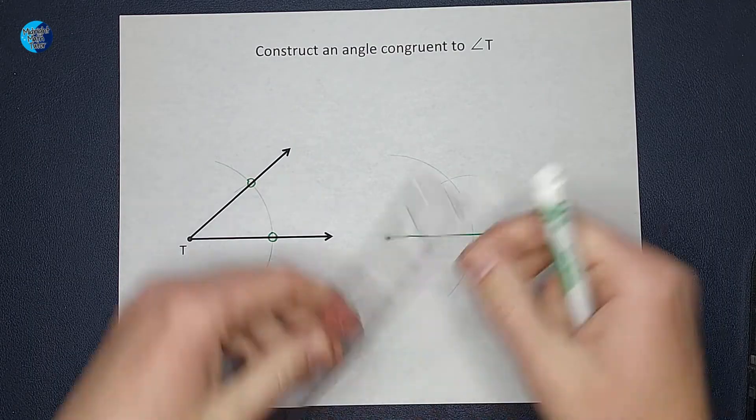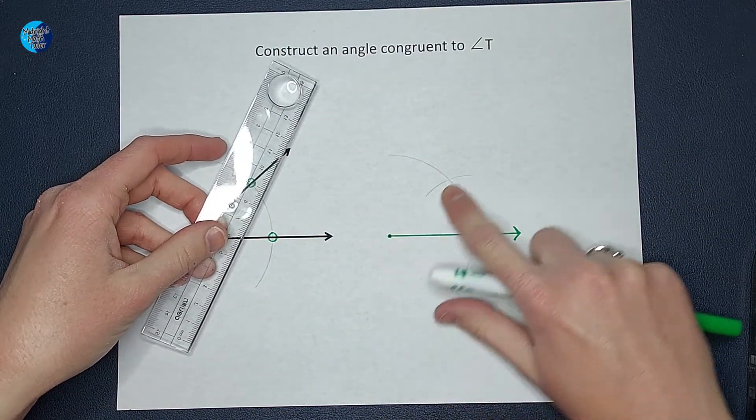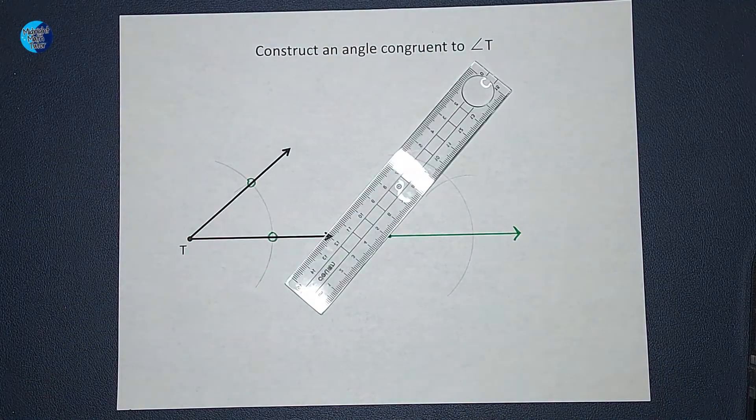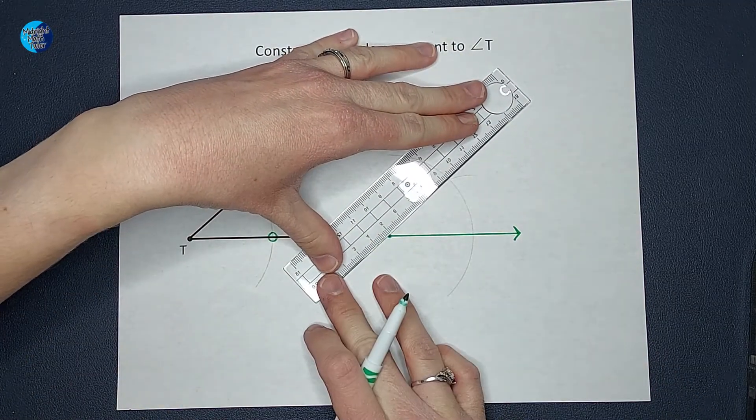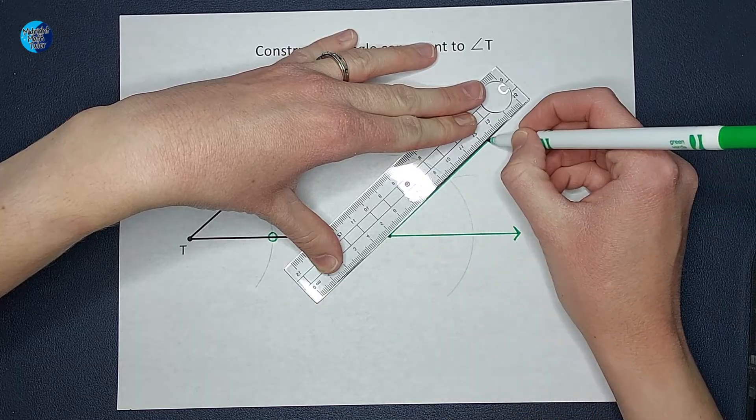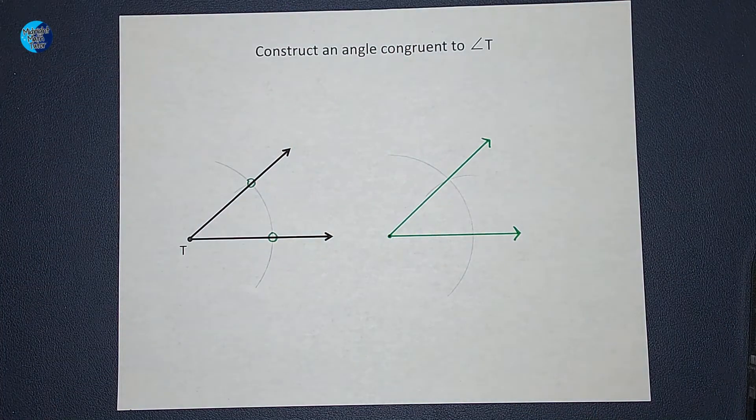The next thing I'm going to do is line up this point with where those two arcs cross. And there is my angle.